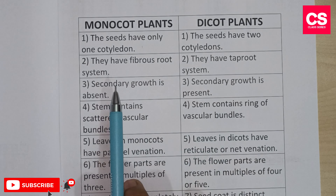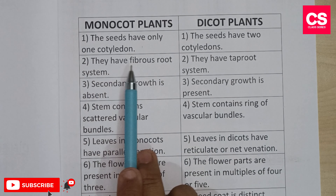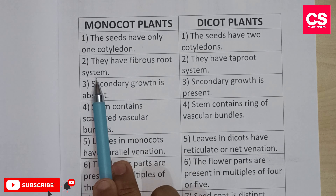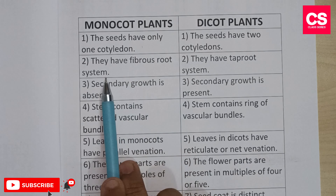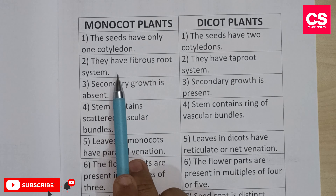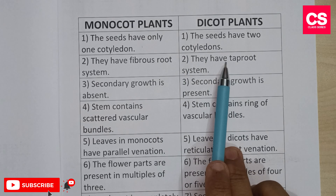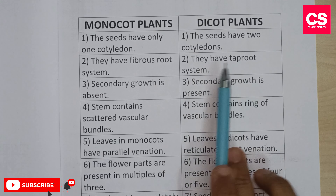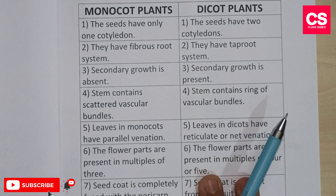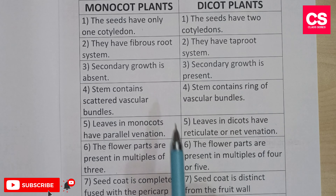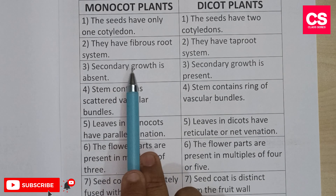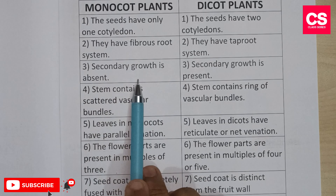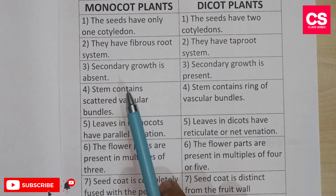The second difference: monocot plants have a fibrous root system, but dicot plants have a tap root system. The third difference: monocot plants do not have secondary growth.